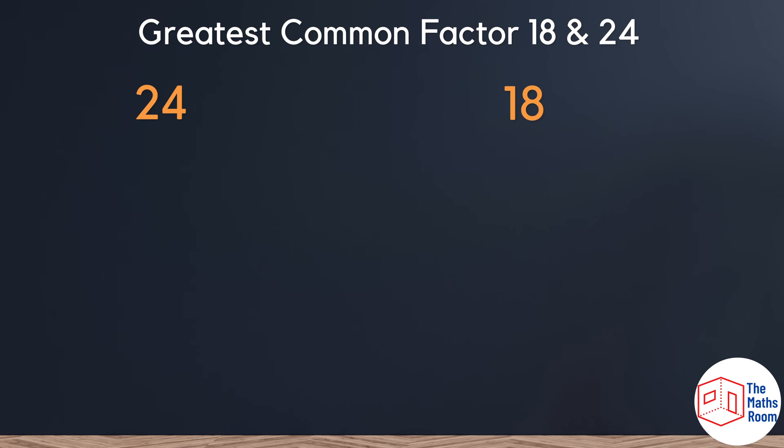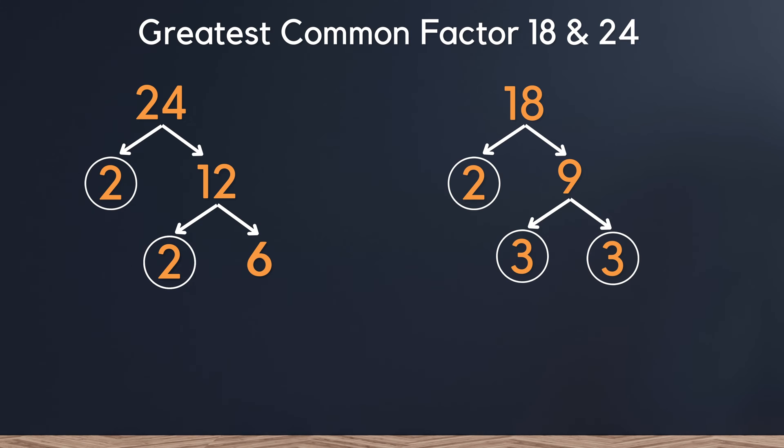To find the greatest common factor, otherwise known as the highest common factor, and the lowest common multiple, will involve first splitting the two or three numbers that you are interested in into their prime factors. This is called prime factorization and can be done with a variety of methods such as the ladder method or the tree method which I'm showing you on the screen right now. If you're not familiar with prime factorization using the tree method, I have a full detailed video which I'll link down below and a card will pop up at the top.